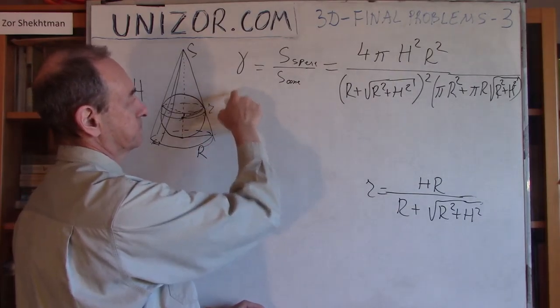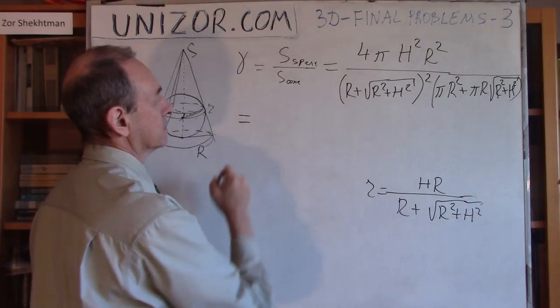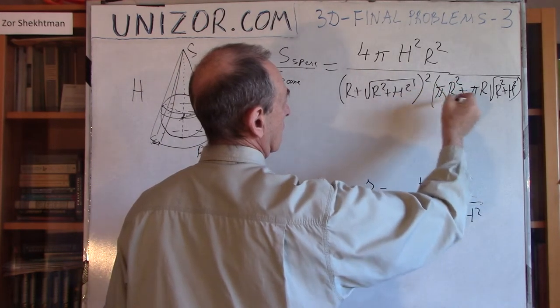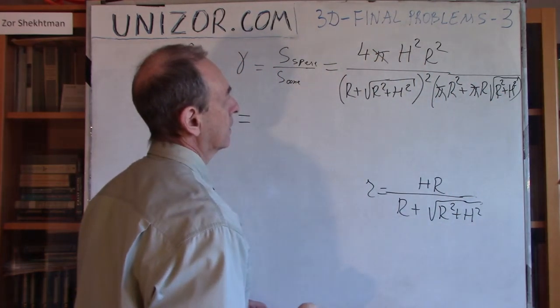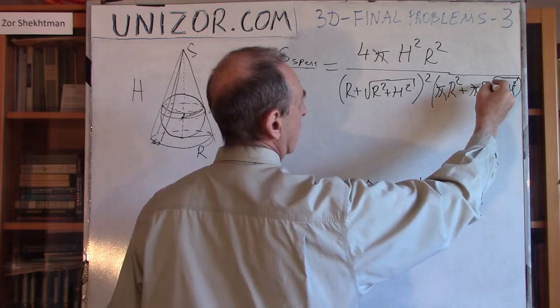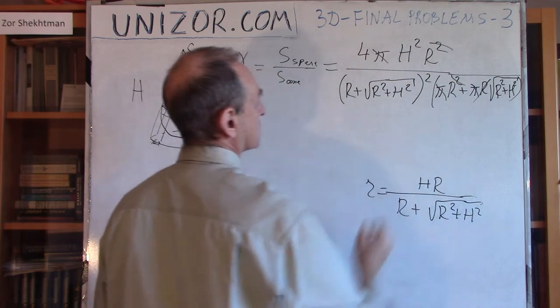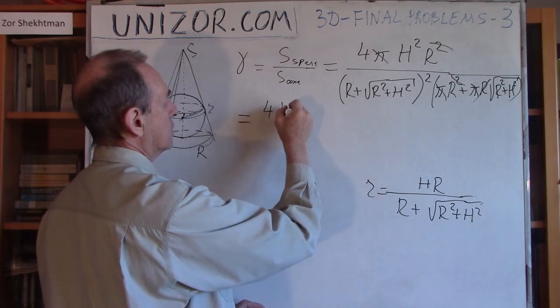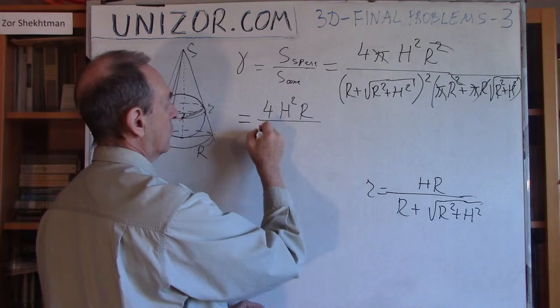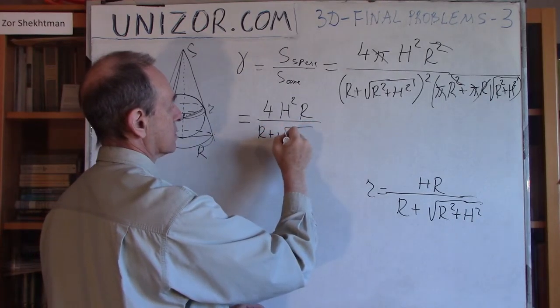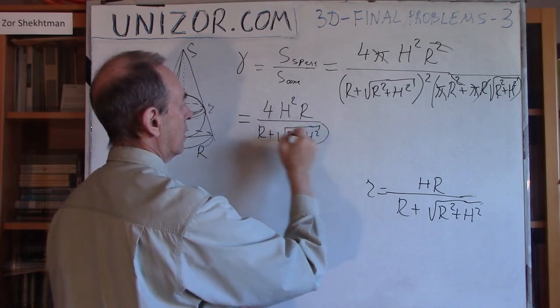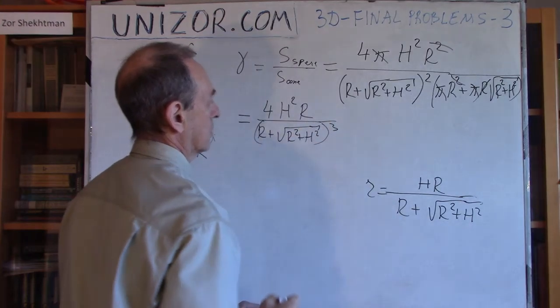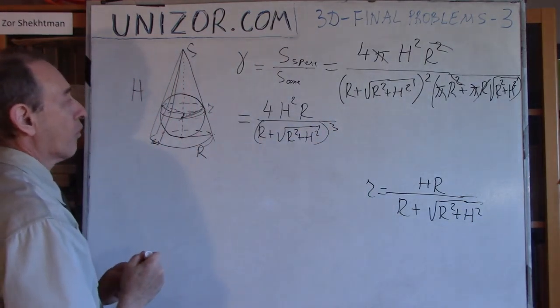That's gamma. Let's simplify it. I can reduce by π, reduce by one R here. What remains? 4H²R divided by R(R + √(R² + H²))². This is second degree, and that would be another, so it's cube. That's my formula for gamma.